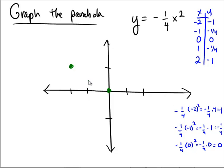And now graph the points: negative 2 comma negative 1, negative 1 comma negative 1 fourth, 0, 0, 1 comma negative 1 fourth, and 2 comma negative 1.